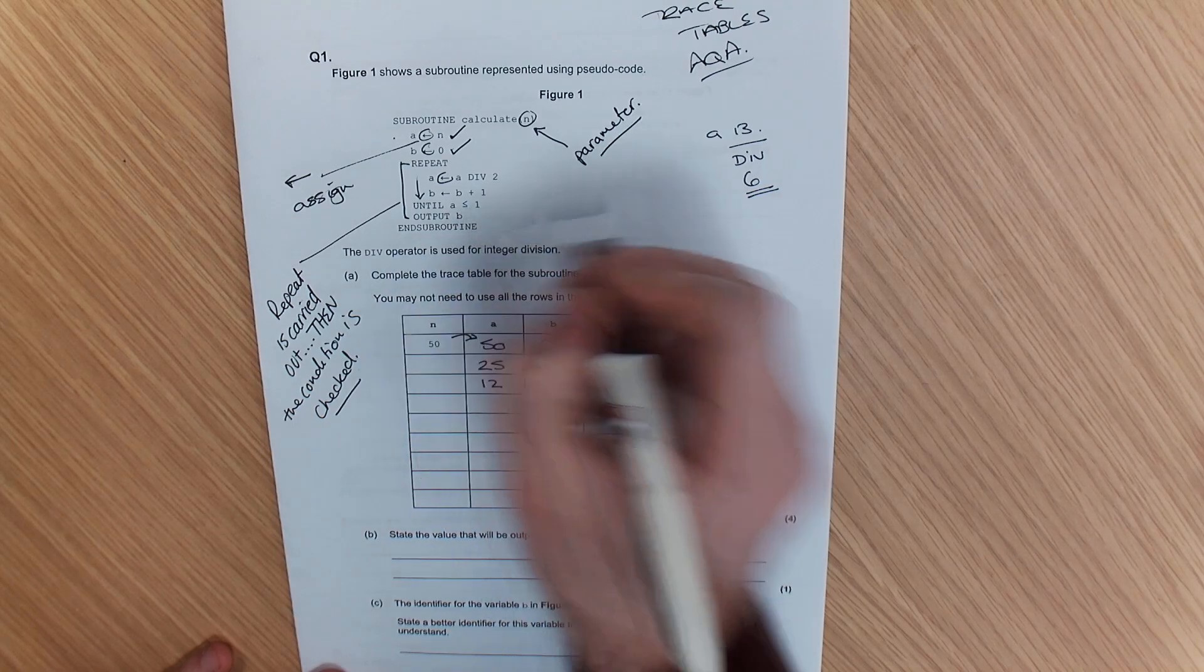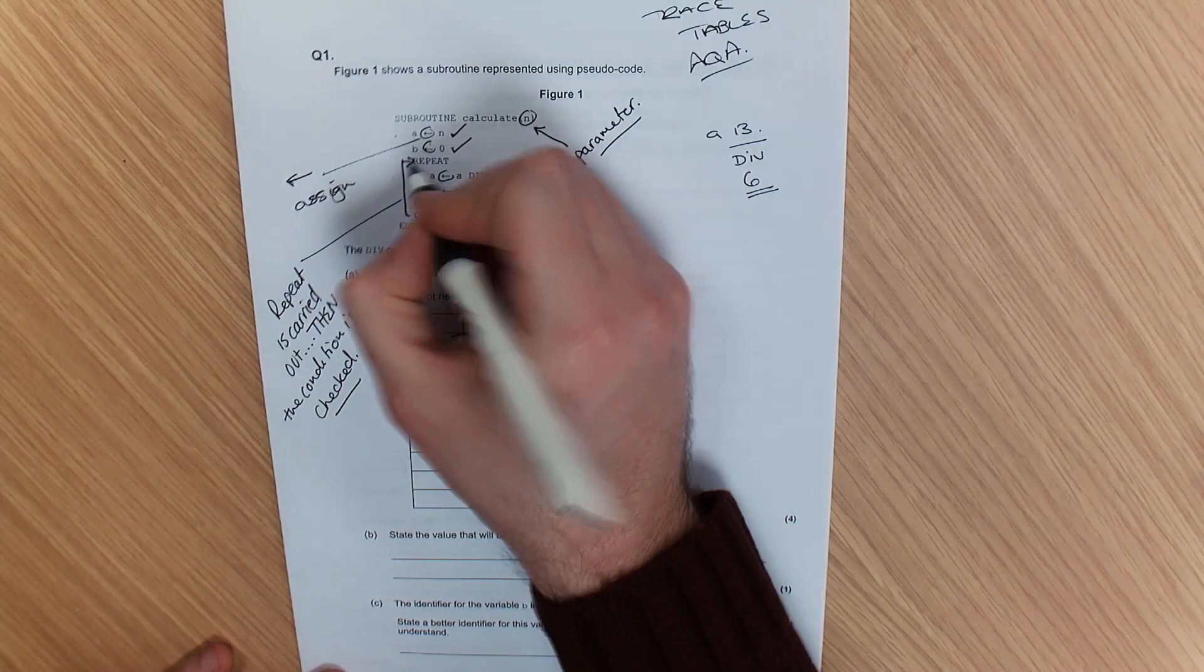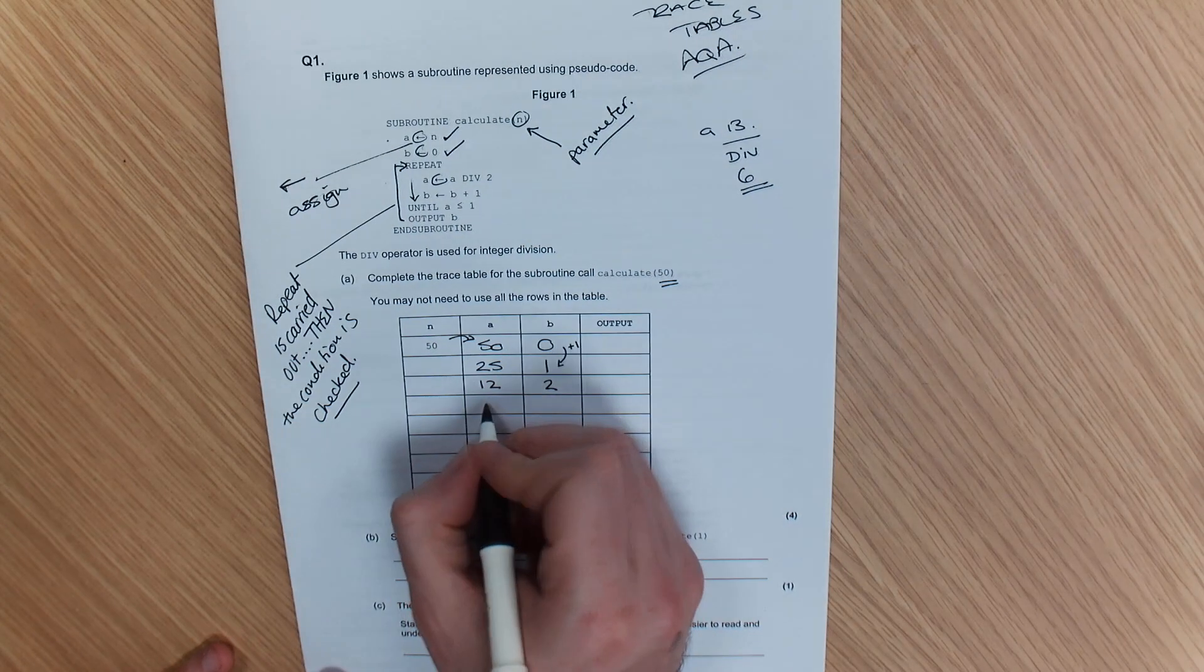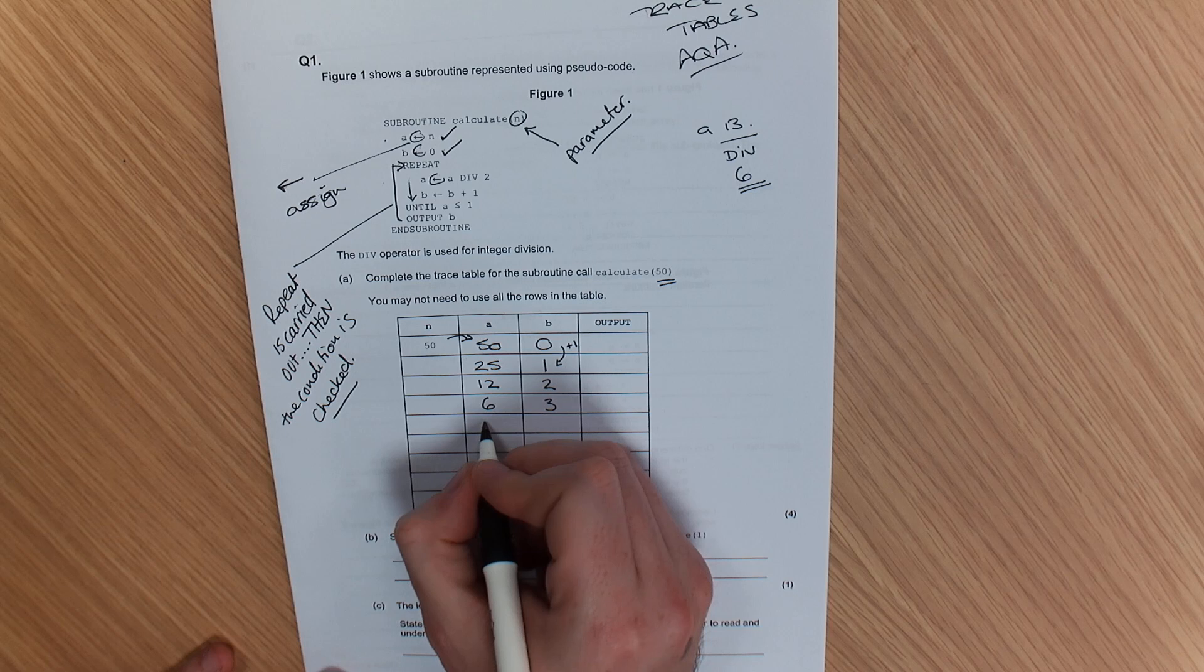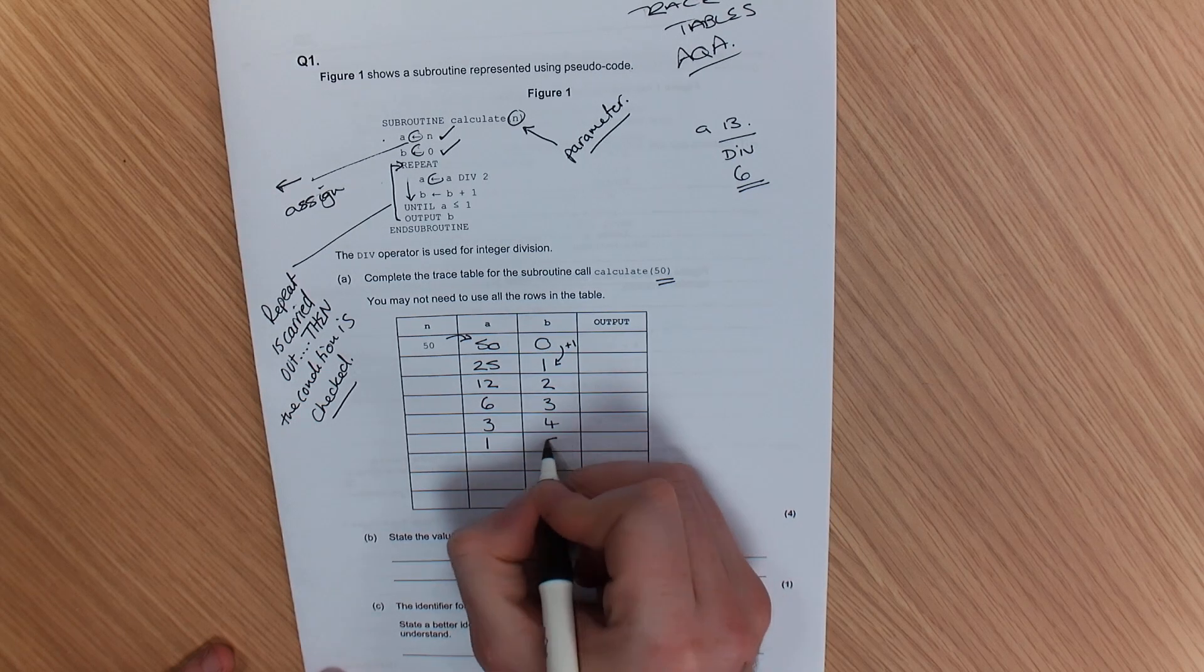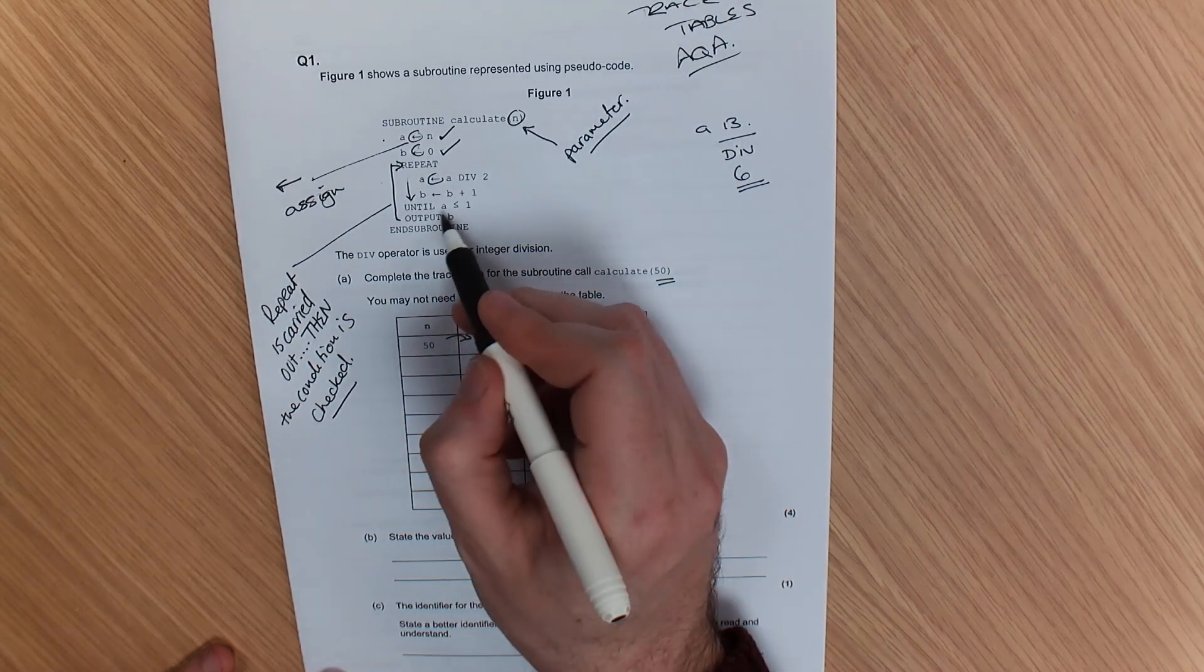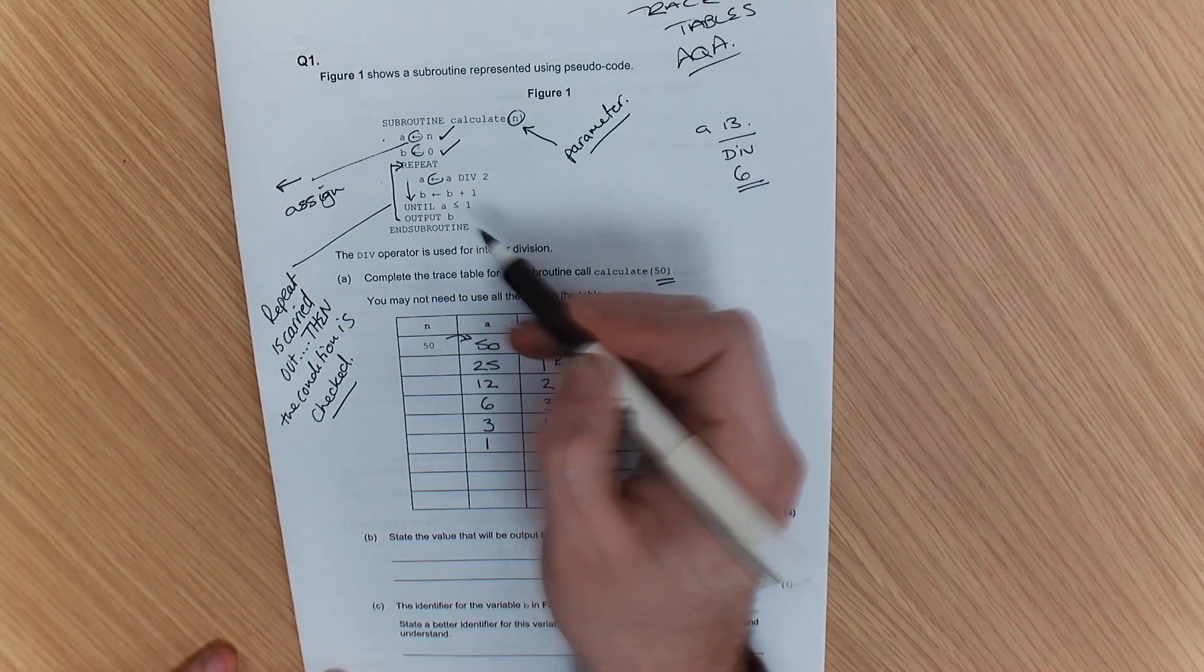Is A less than or equal to 1? Well, no, it's not. So I'm going to go back up to the top, to the repeat, and do it again. 12 is 6, and 3. 6 is 3. This is 4. 3 is now 1. And 4 becomes 5 until A is less than or equal to 1. It is less than or equal to 1.